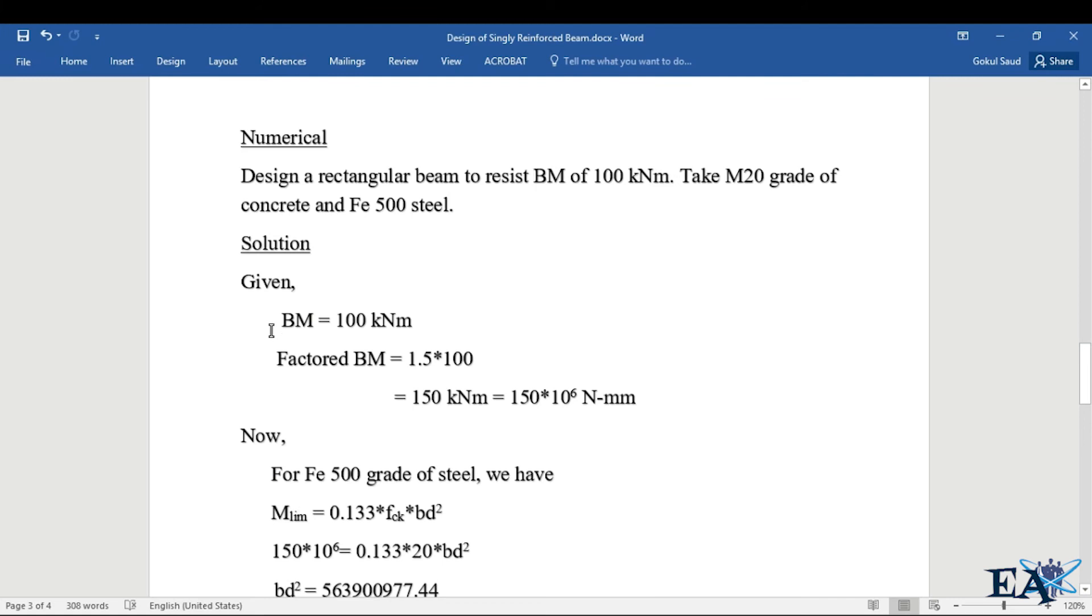Given is that BM, bending moment due to external load, is 100 kNm. And factored bending moment we calculate. Why? Because limit state method says we have to apply partial factor of safety to the load, and the partial factor of safety for the load is 1.5 here. So 1.5 times 100, that is 150 kNm, or 150×10⁶ N-mm.